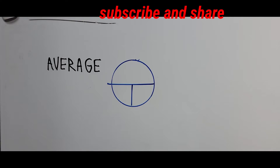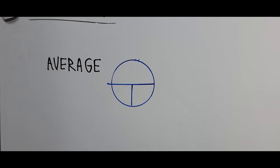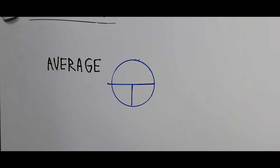Good morning everyone, we have a new topic today — it's called average. This is mathematics, so what does it mean by average? If we have, for example, five tests, and you got a total score for each test, for those five tests you will get the average by dividing the total score you got by the number of tests. That's how we get average.